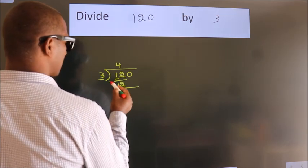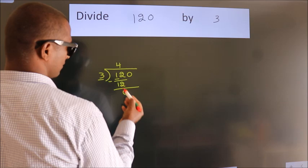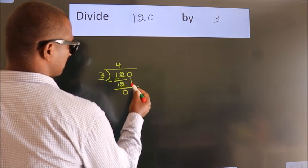Now we should subtract, we get 0. After this, bring down the beside number.